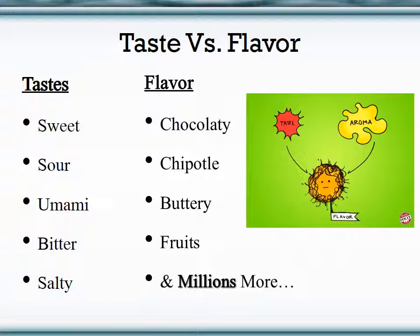Flavor — examples include chocolatey, chipotle, buttery, fruity, and many, many more. There are five tastes and millions of flavors. Taste is the chemical message sent to our body; it is very scientific and concrete. Flavor is more our association with what we put in our mouths — specifically, flavor is the combination of taste and smell. For example, sweet and sour chicken has a sweet taste and a sour taste, but that sweet-and-sour combination is the flavor associated with that dish. You can have those individual perceptions of sweet and sour, but when those tastes come together with that food, you get the sweet and sour flavor.